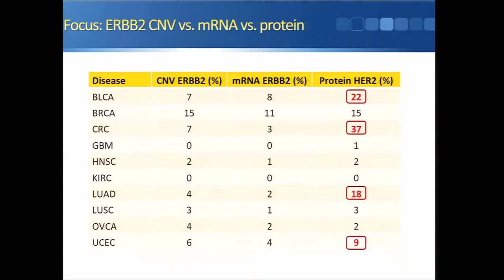Similarly for colorectal cancer, only 7% by copy number, 3% by mRNA, but 37% by protein. We also saw discrepancies in lung adeno and endometrial. This is important because many therapies currently being used — for example Herceptin, and the new drug TDM1 — work at the protein level and target the protein on the cell surface. Yet many tests used today check for HER2-positive patients using copy number or mRNA platforms. So we should probably measure protein directly to assess who could benefit from therapy.